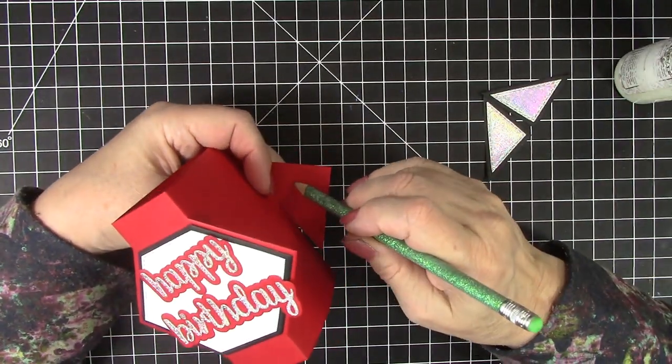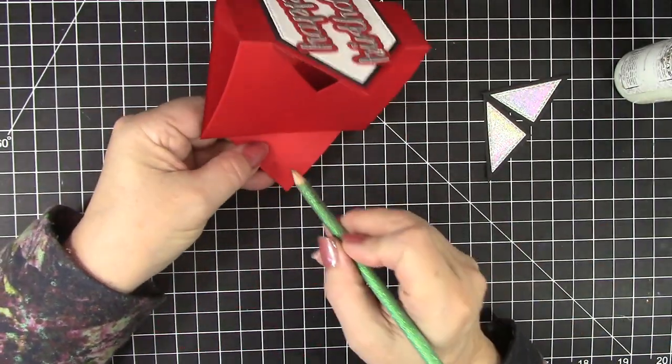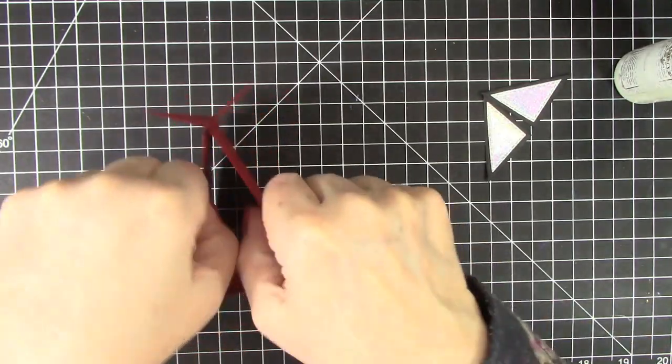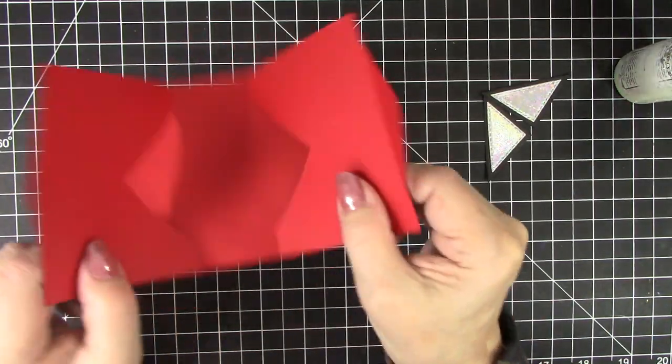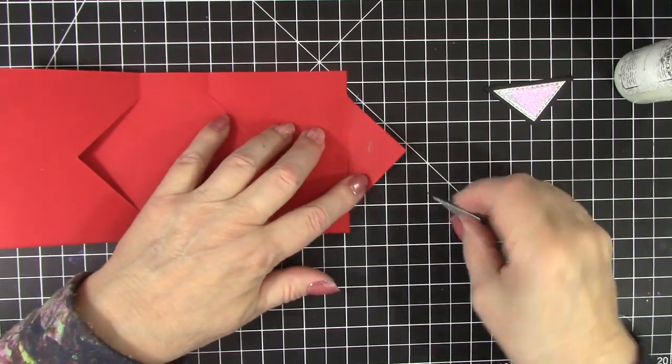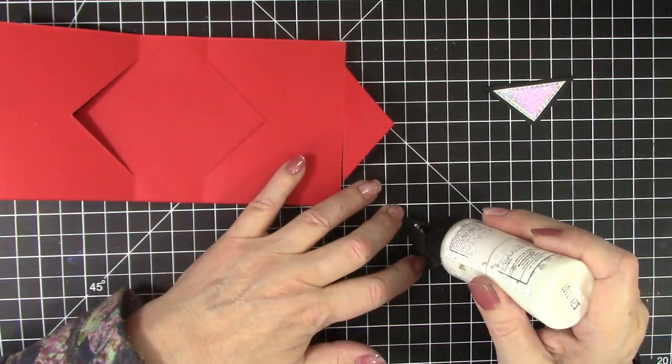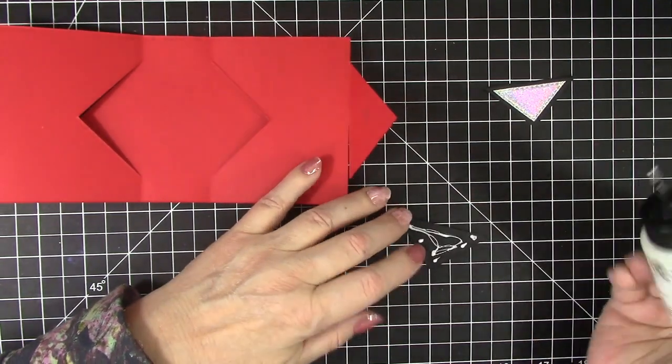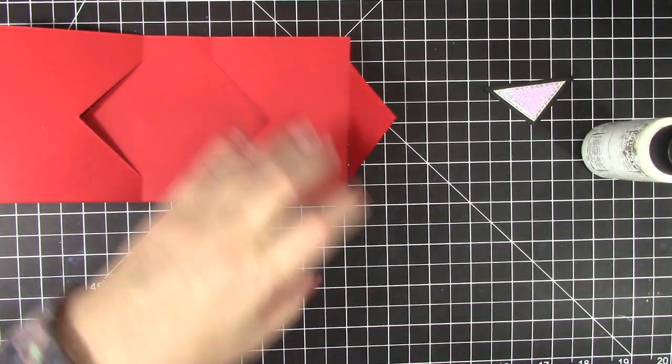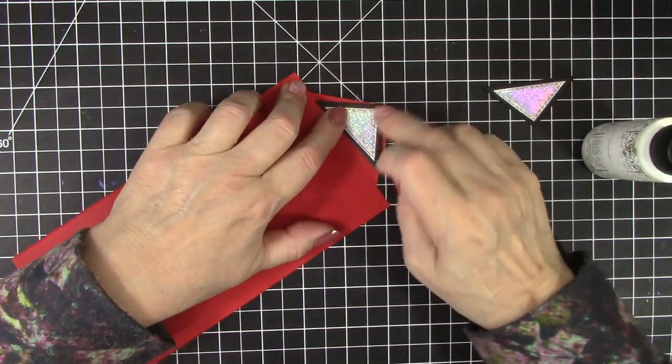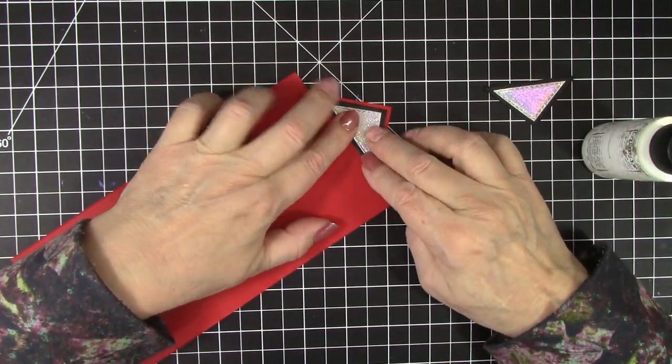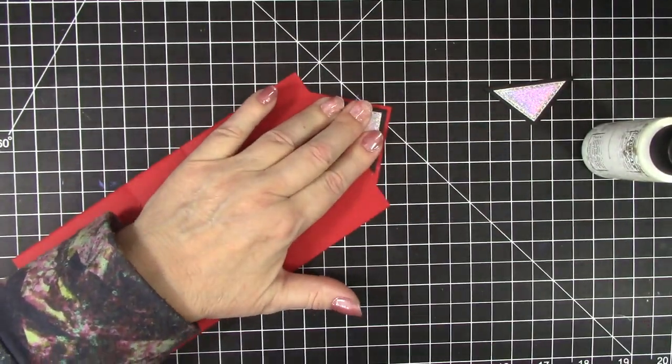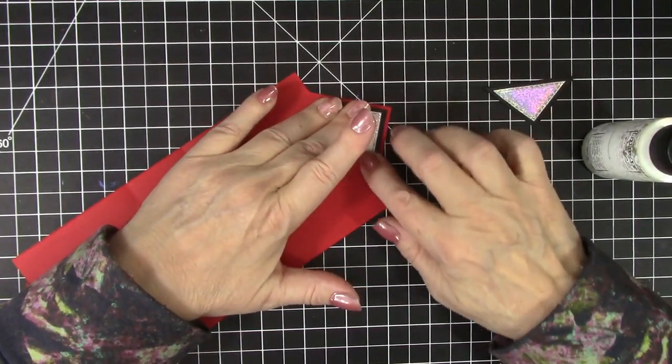I want to always make sure I put those triangles on the right side which I think technically is the back. But I'm going to mark it just to be sure. And put these decorative pieces on as well. With an even border. I just love the color combination of red, black, and silver.